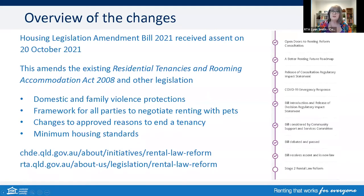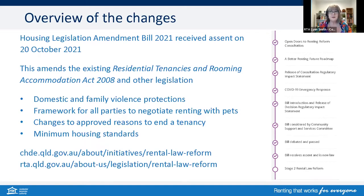Let's kick on with our first topic — a brief summary of the process of the new amendments. This commenced with renting reform consultation back in 2018, and the image on your right-hand side shows the various steps up until where we are now, which is the Housing Legislation Amendments Act 2021. That was passed in Parliament in October and became law. This amends existing Residential Tenancies and Rooming Accommodation Act and regulations, and also repeals the COVID emergency response laws. The four key areas are: domestic and family violence, a framework for negotiating renting with pets, approved reasons to enter tenancy, and minimum housing standards.